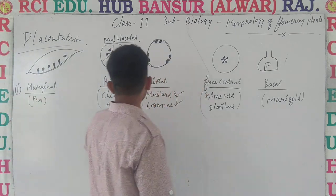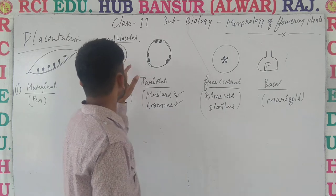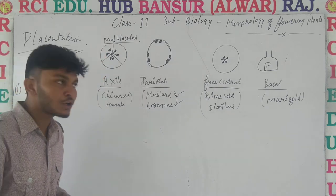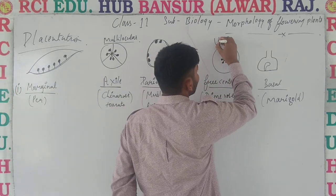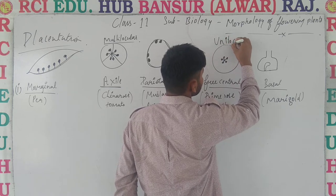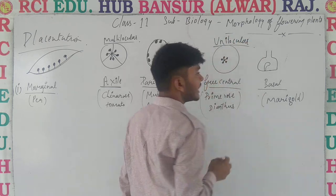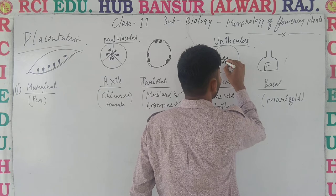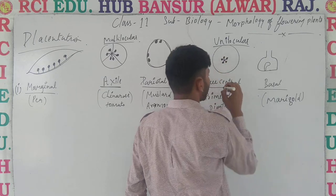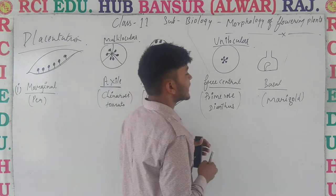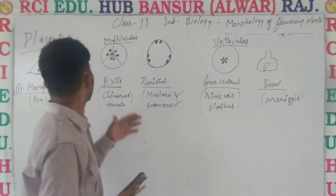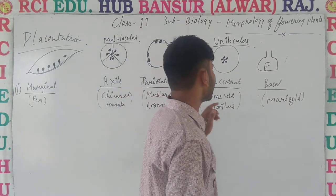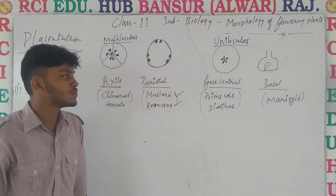Next we talk about free central placentation. देखो, axile और free central दोनों के अंदर ovules axis पे पाई जा रहे हैं, but axile के अंदर ovary multilocular होती है, whereas free central के अंदर ovary unilocular होती है — there is a single locule. इसके अंदर जो ovules form हो रहे हैं, वो center या axis के उपर पाई जा रहे हैं. That type of placentation is known as free central placentation. Its examples are primrose and dianthus.